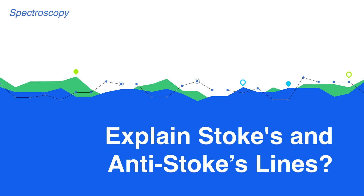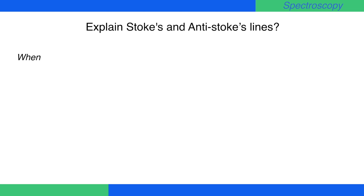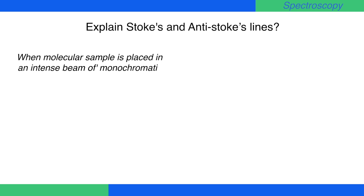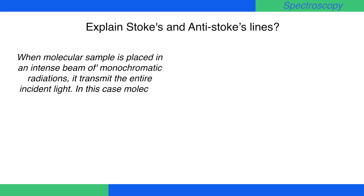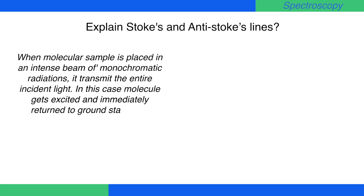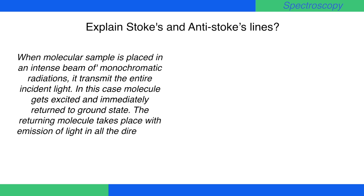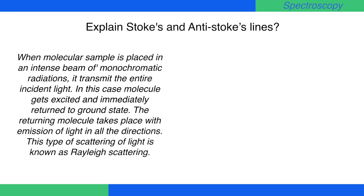Explain Stokes and anti-Stokes lines. When a molecular sample is placed in an intense beam of monochromatic radiation, it transmits the entire incident light. In this case, the molecule gets excited and immediately returns to the ground state. This returning process takes place with emission of light in all directions. This type of scattering of light is known as Rayleigh scattering.